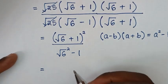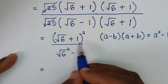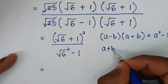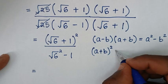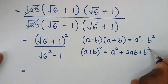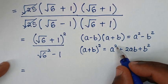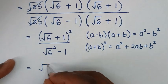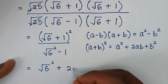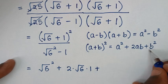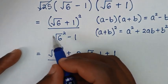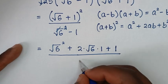Then it will be equal to: the numerator square root of 6 plus 1, bracket, squared — this part is in the form of (a plus b) squared, which equals a squared plus 2ab plus b squared. So a squared is square root of 6 squared, plus 2ab is 2 times square root of 6 times 1, plus b squared is 1 squared which is 1. In the denominator, square root of 6 squared cancels to give 6, minus 1 squared is 1, so 6 minus 1 is 5.